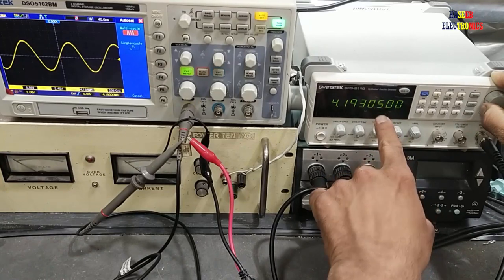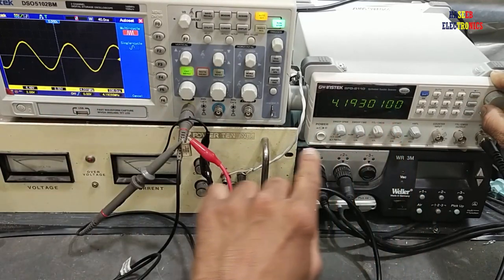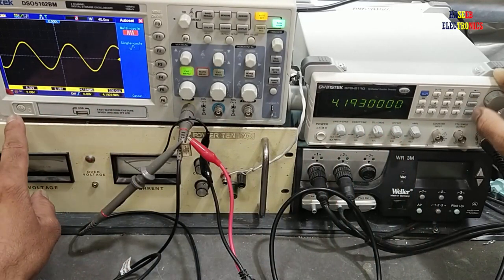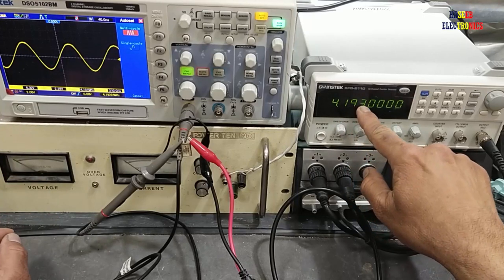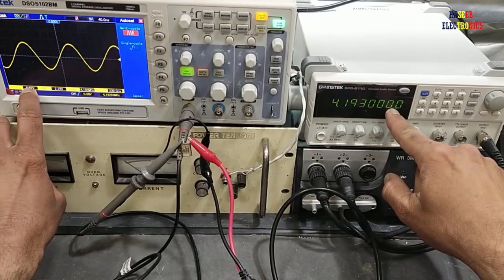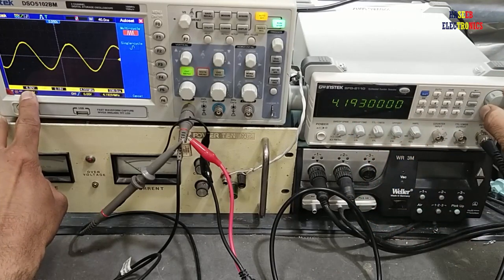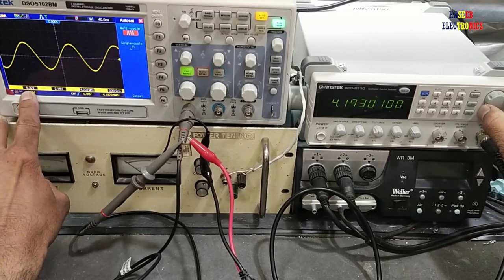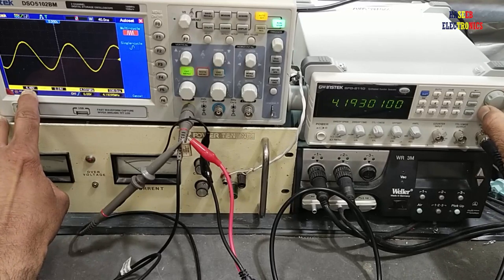At 4.19300, we have 6.32 volts. Moving one step to 4.19301 gives 6.48 volts. Continuing to adjust the third decimal place to find the peak voltage.